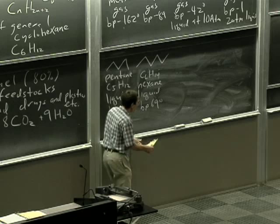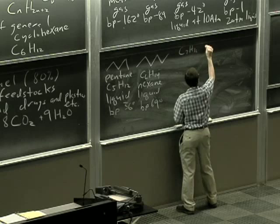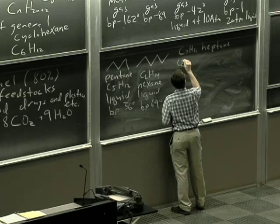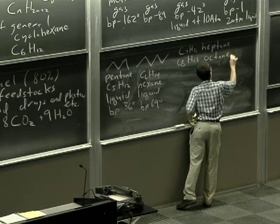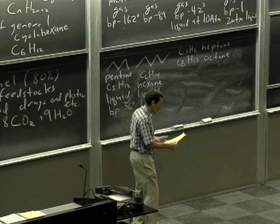All right. If we go through our names, C7H16 is heptane. We saw C8H18 octane. It's probably worth knowing how to count to about 12 and maybe knowing 20, number 20 beyond that.